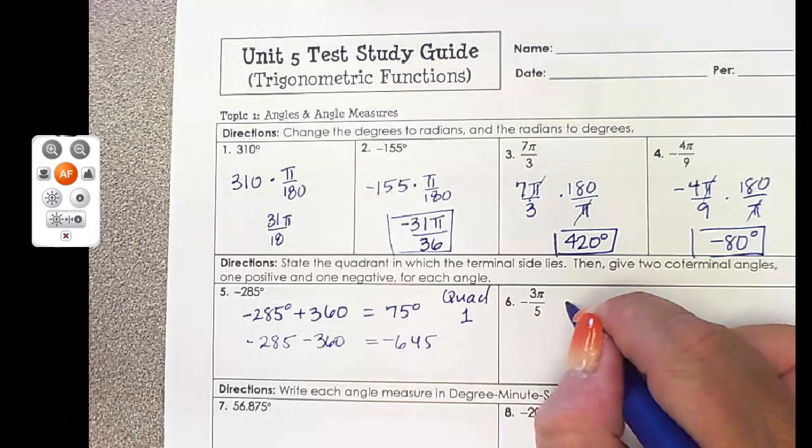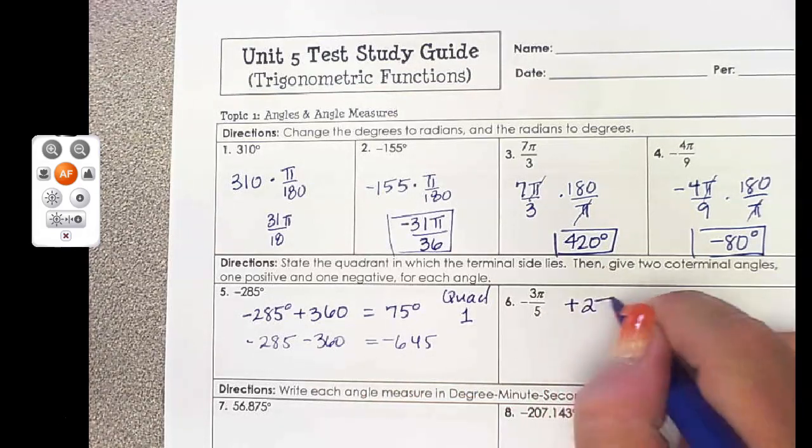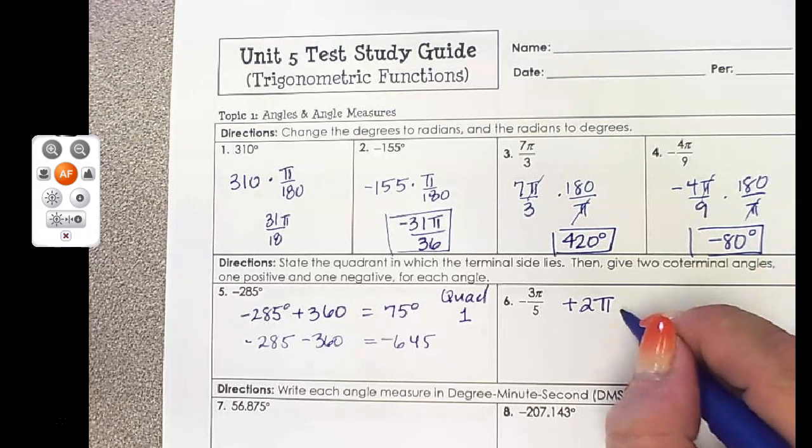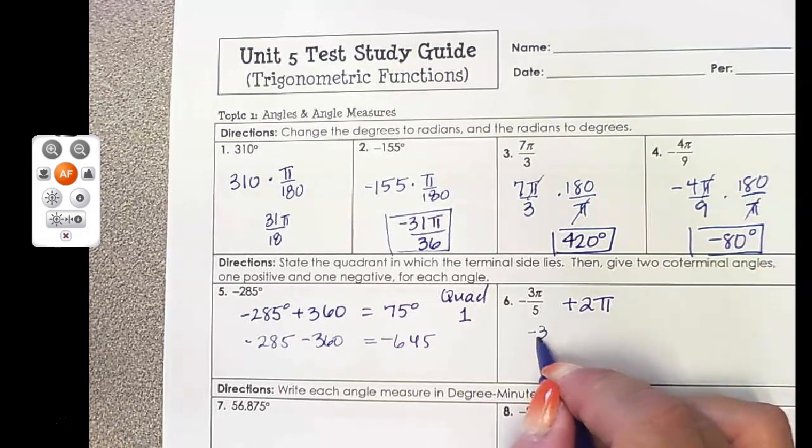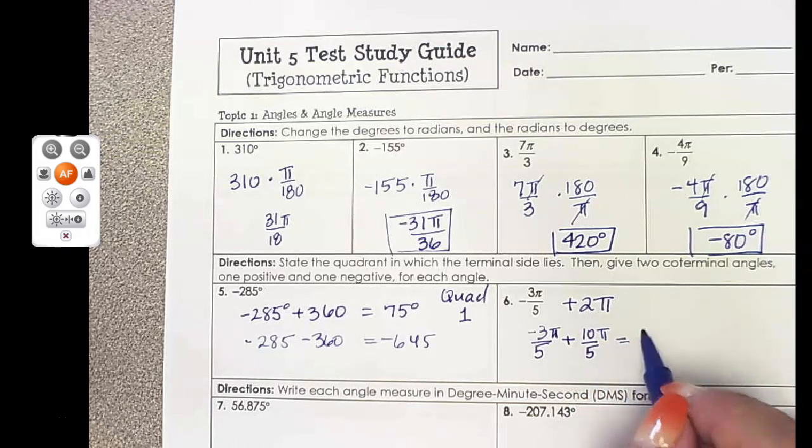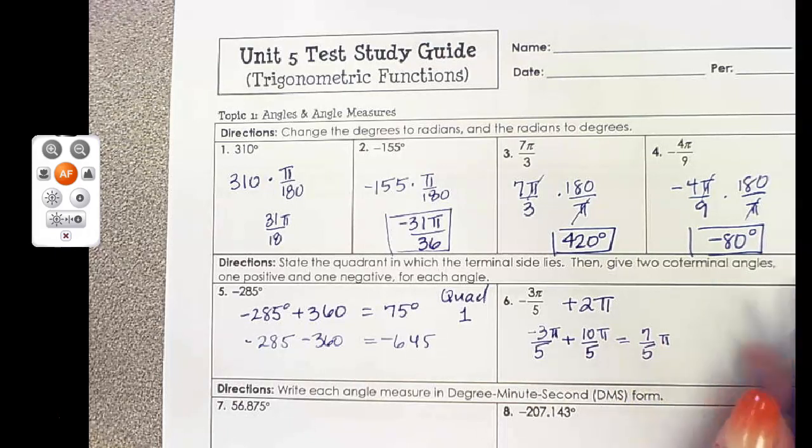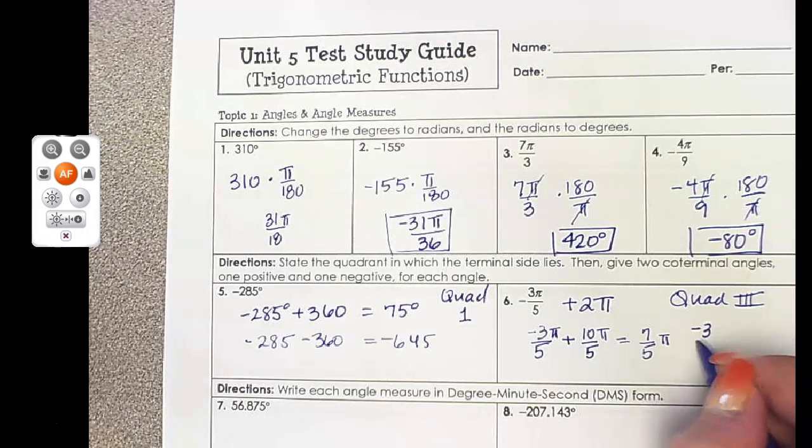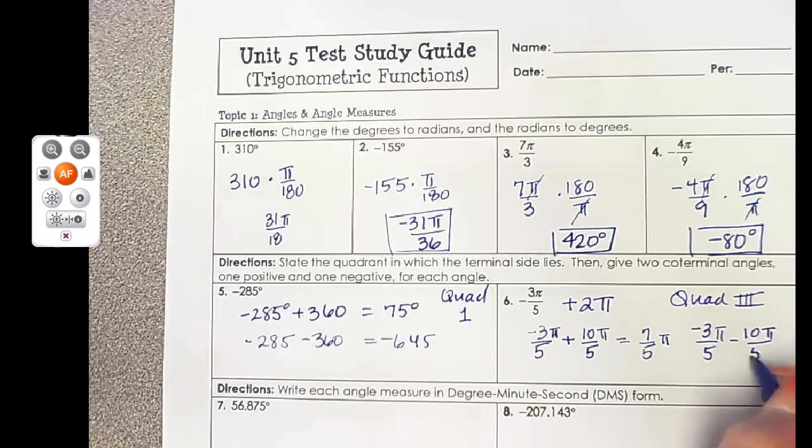Negative 3/5 π, that is in radians. So to find a coterminal angle with that, I'm going to add 2π. To get the final answer for that, I'm going to do a quick fraction problem. 2π is the same as 10/5 π if I'm getting a common denominator, so that's positive 7/5 π. And so that is going to be in quadrant 3. And then if I want to get another coterminal angle, negative 3/5 π, I'm going to subtract 2π. I'm going to rewrite 2π as 10π over 5, so that's negative 13π over 5.